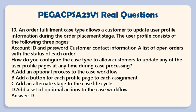Question 10: An order fulfillment case type allows a customer to update user profile information during the order placement stage. The user profile consists of the following three pages: account ID and password, customer contact information, and a list of open orders with the status of each order. How do you configure the case type to allow customers to update any of the user profile pages at any time during case processing? a. Add an optional process to the case workflow. b. Add a button for each profile page to each assignment. c. Add an alternate stage to the case lifecycle. d. Add a set of optional actions to the case workflow.